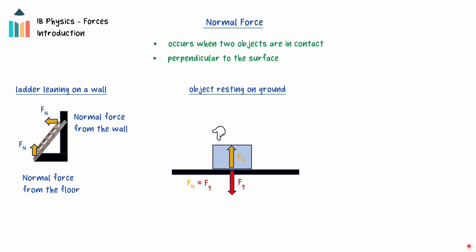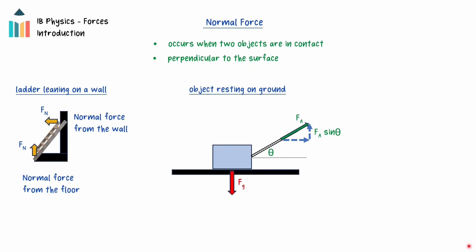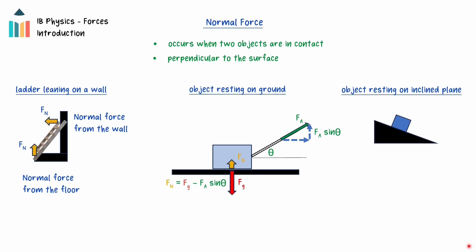If there is an additional downward force acting on the object, then the normal force will increase. If there is an additional upward force acting on the object, such as the tension from a rope, the vertical component of this applied force will cause the normal force to decrease. The normal force is always perpendicular to the surface. This is especially important to note if the object is on an inclined plane. The normal force will be perpendicular to the surface of the plane, and if there are no other forces acting into the plane, it will be equal to the component of the force of gravity into the plane. This is equal to the force of gravity times the cosine of theta, where theta is the angle that the plane makes with the horizontal.